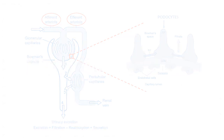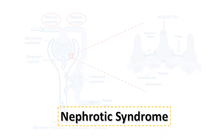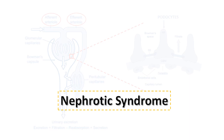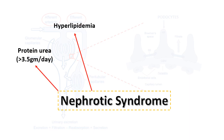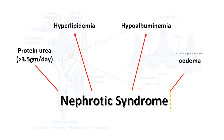As you all might be knowing, nephrotic syndrome will present with a tetrad of proteinuria which is more than 3.5 grams per day, hyperlipidemia i.e. increased lipid levels in the blood, hypoalbuminemia, and peripheral edema. Let's see how all this occurs.